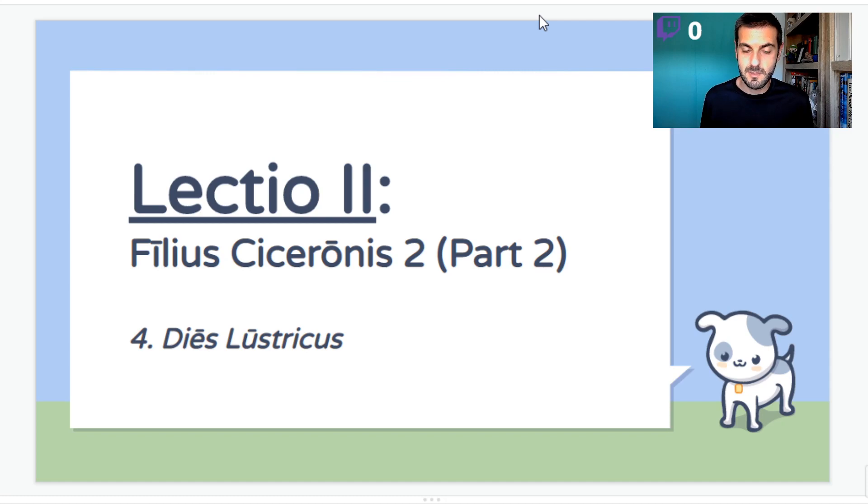Okay, so this is the second part of Lectio Secunda, I guess, the Filius Ciceronis story. I did part one yesterday, I'm doing part two today. This is a little bit shorter, so hopefully we'll knock this out pretty quick. So the title for this little section is the Dies Lustricus, so this is going to be our little culture unit.